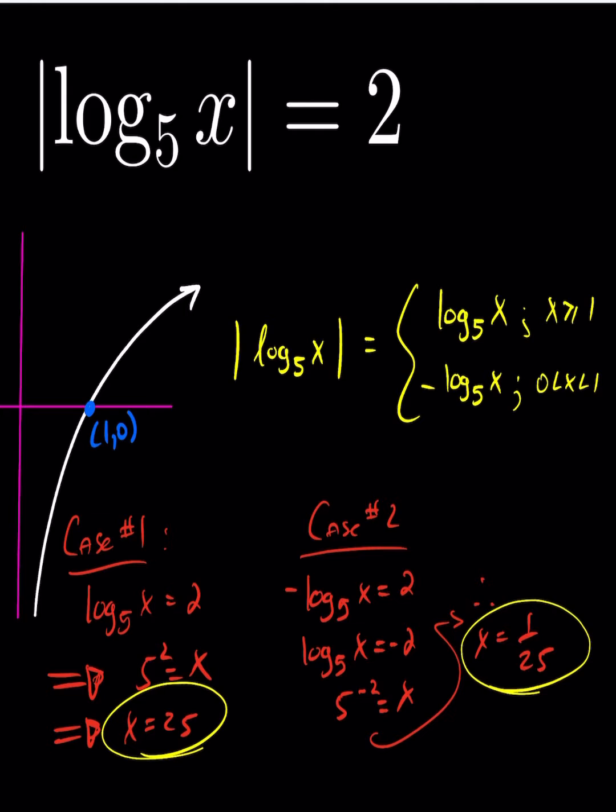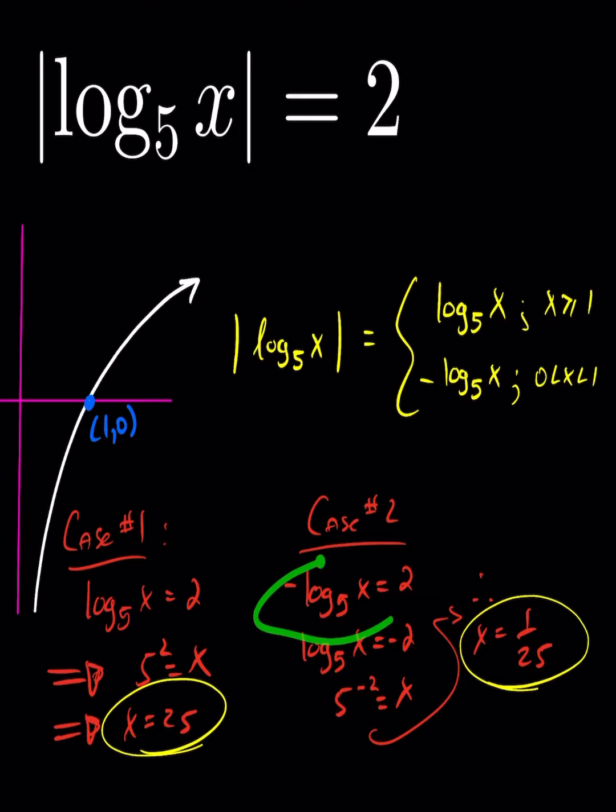As soon as you're solving a logarithmic equation go to exponential, in which case we get x is 25. Or in this case here before I go to exponential I have to multiply across by minus 1, and then we have x equals 5 to the negative 2.